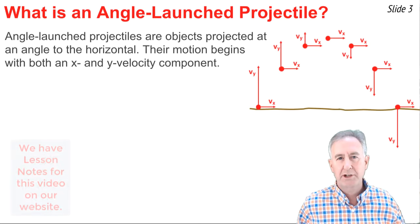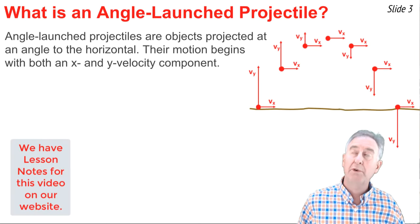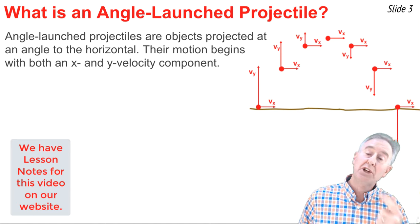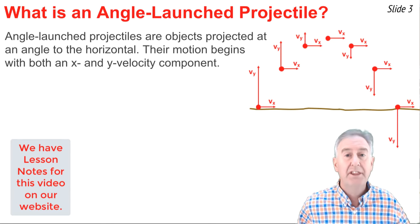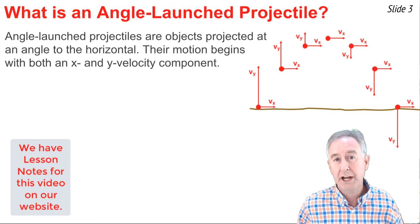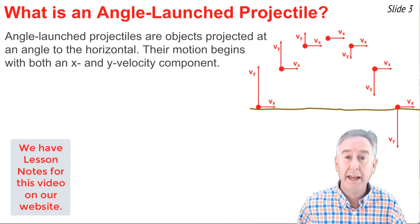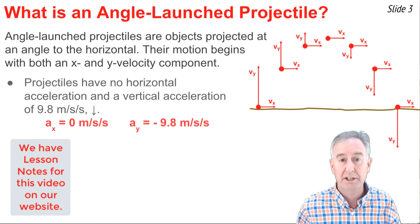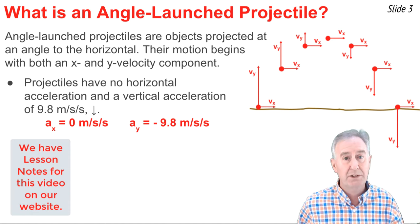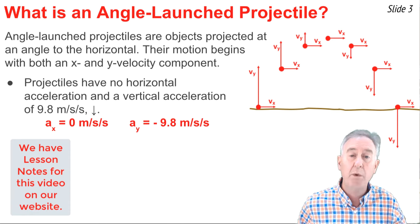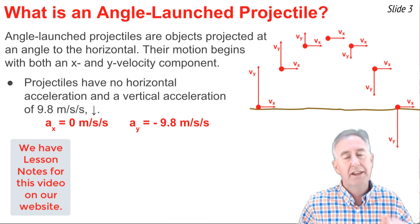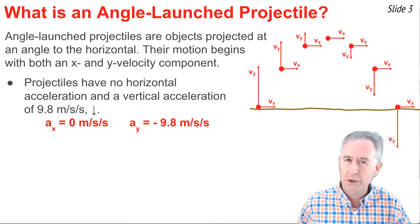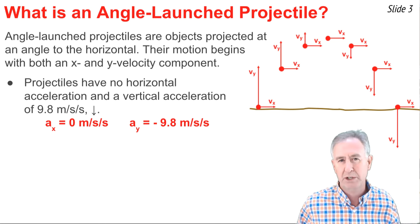Angled-launched projectiles are projectiles launched at an angle to the horizontal. Initially, there are both x and y components of velocity. There are three things you should know about such projectiles to analyze the mathematical problems involving them. The first is that the ax value is zero, and the ay value is negative 9.8 meters per second per second. This is true of all projectiles.